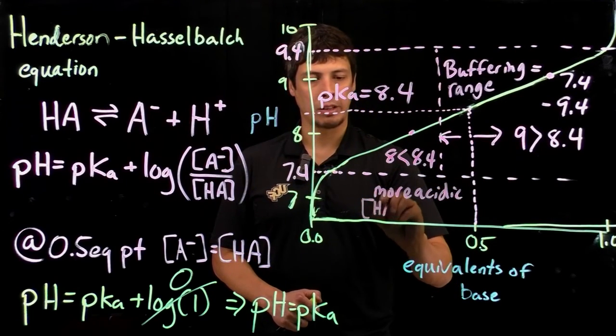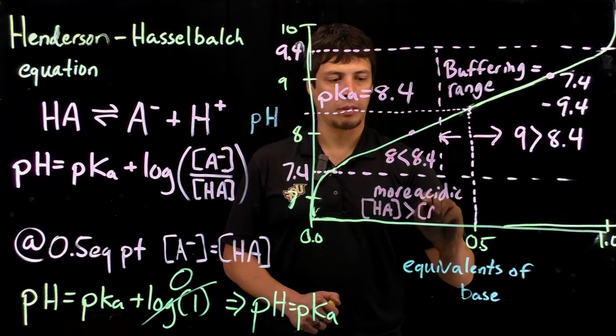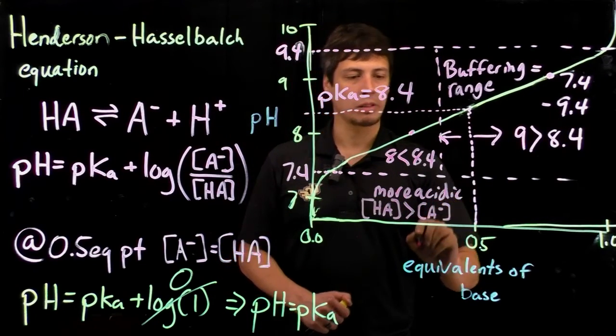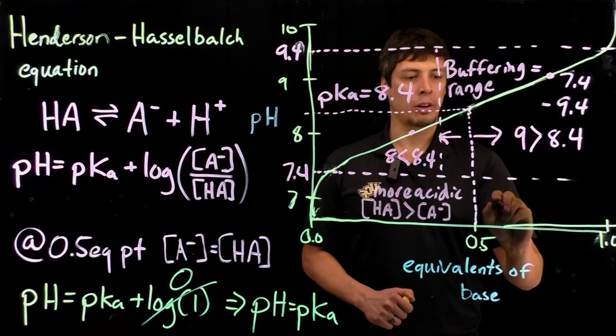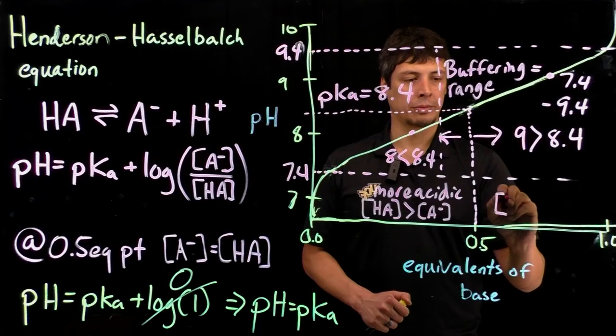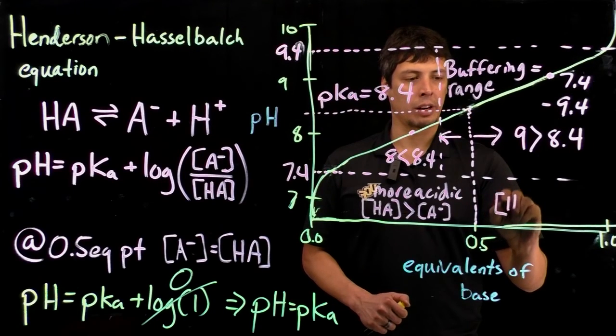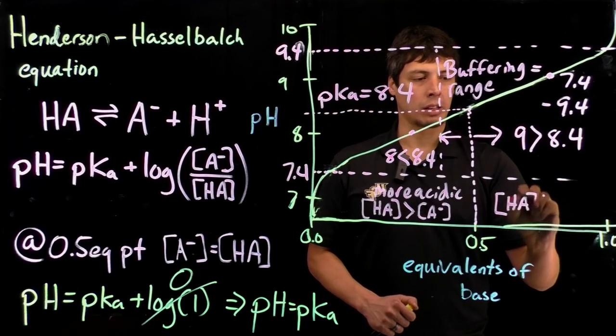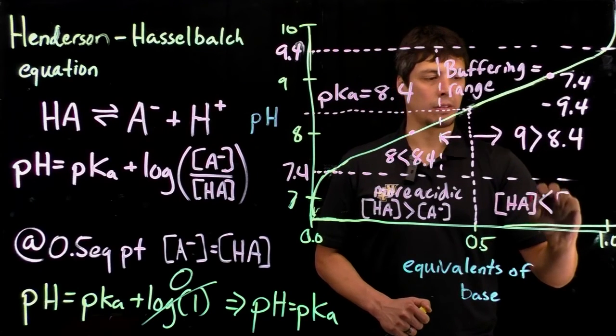The concentration of HA will be greater than the concentration of the conjugate base, and over here the concentration of HA will be less than the concentration of conjugate base.